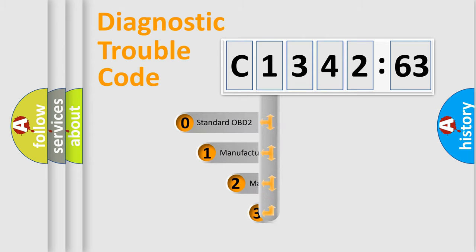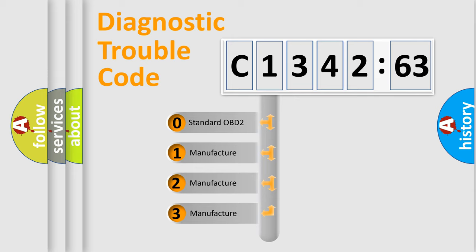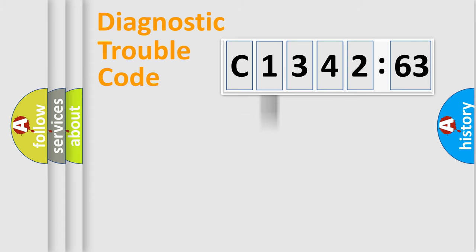Powertrain, Body, Chassis, Network. This distribution is defined in the first character code. If the second character is expressed as zero,